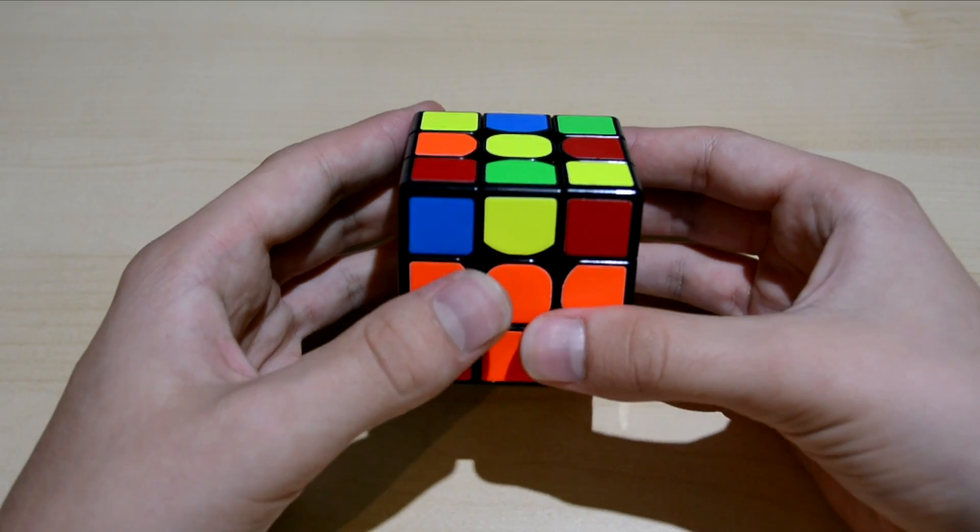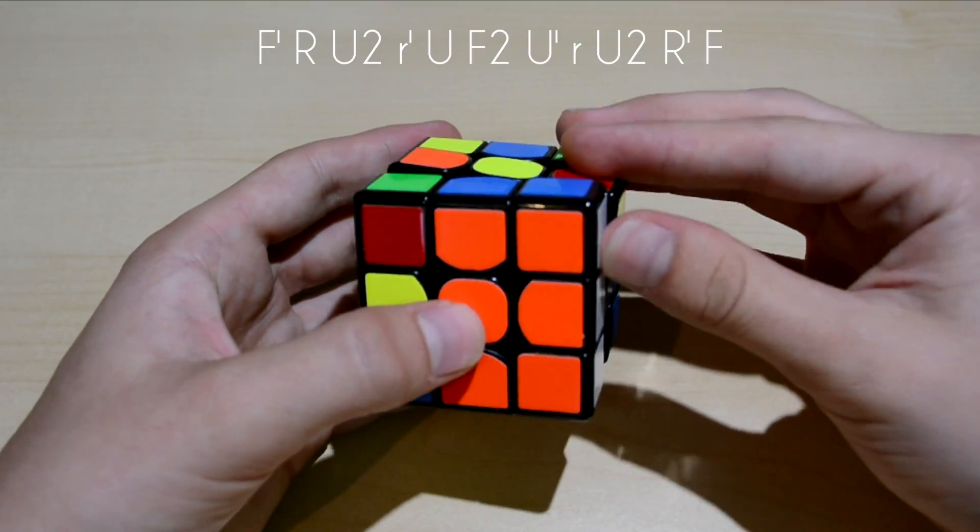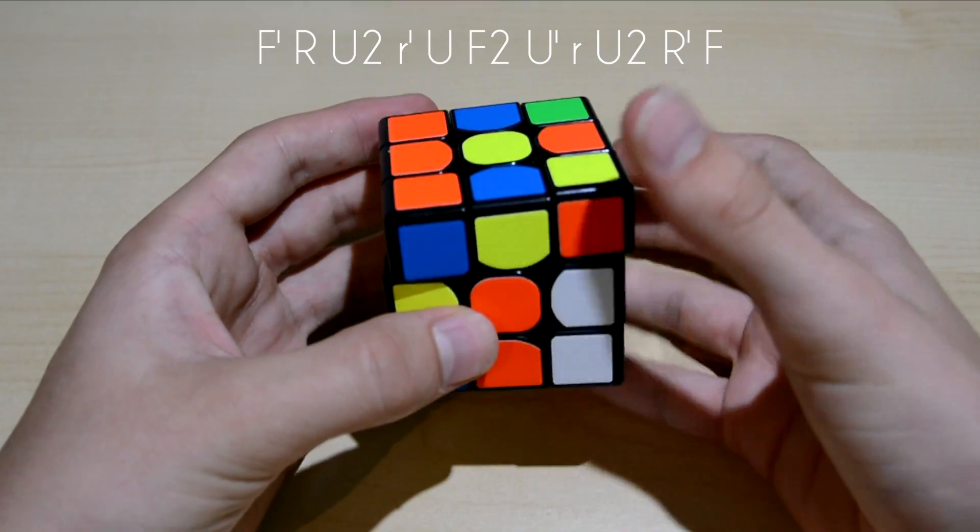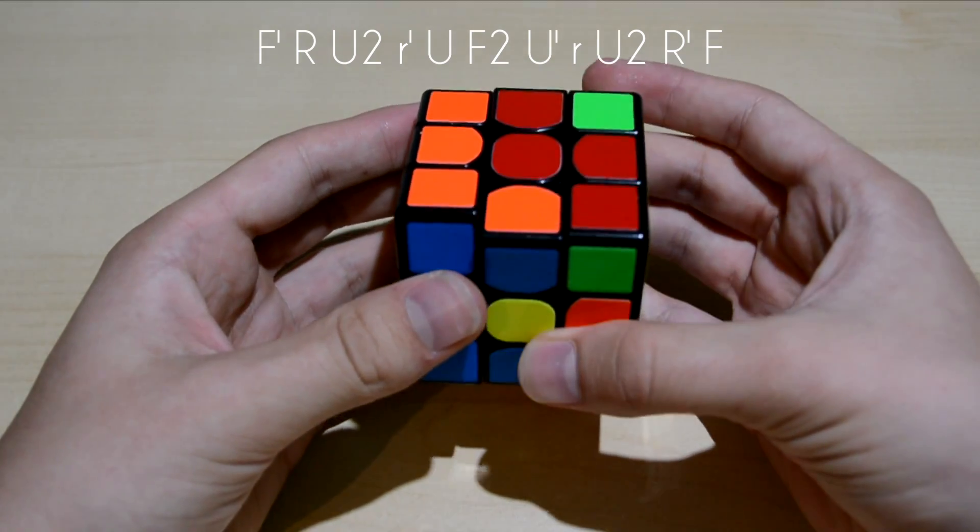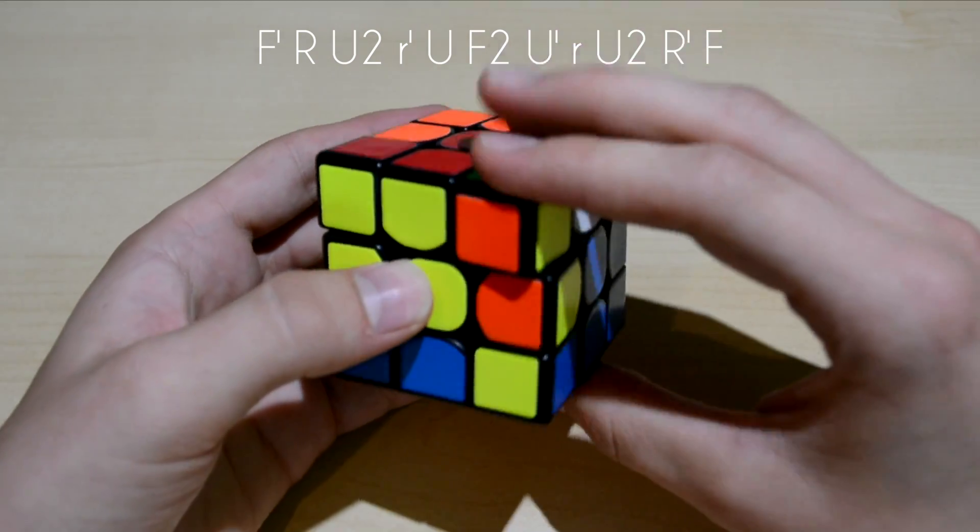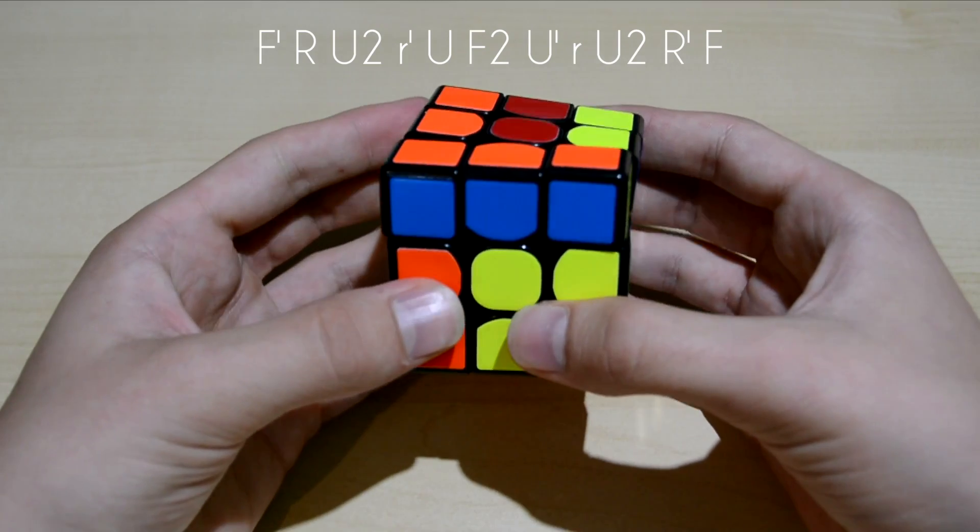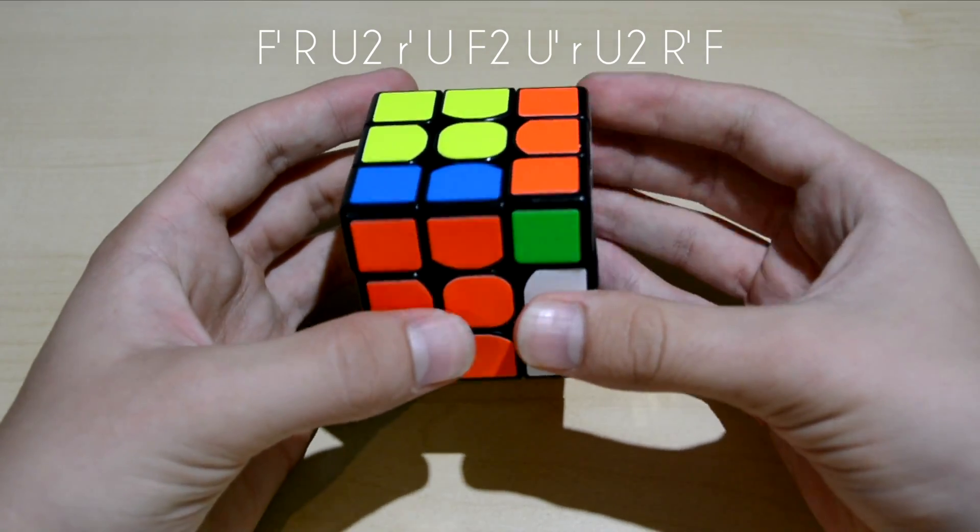The second algorithm goes like this: F', R U2 R', U F2 U', R U2 R'.